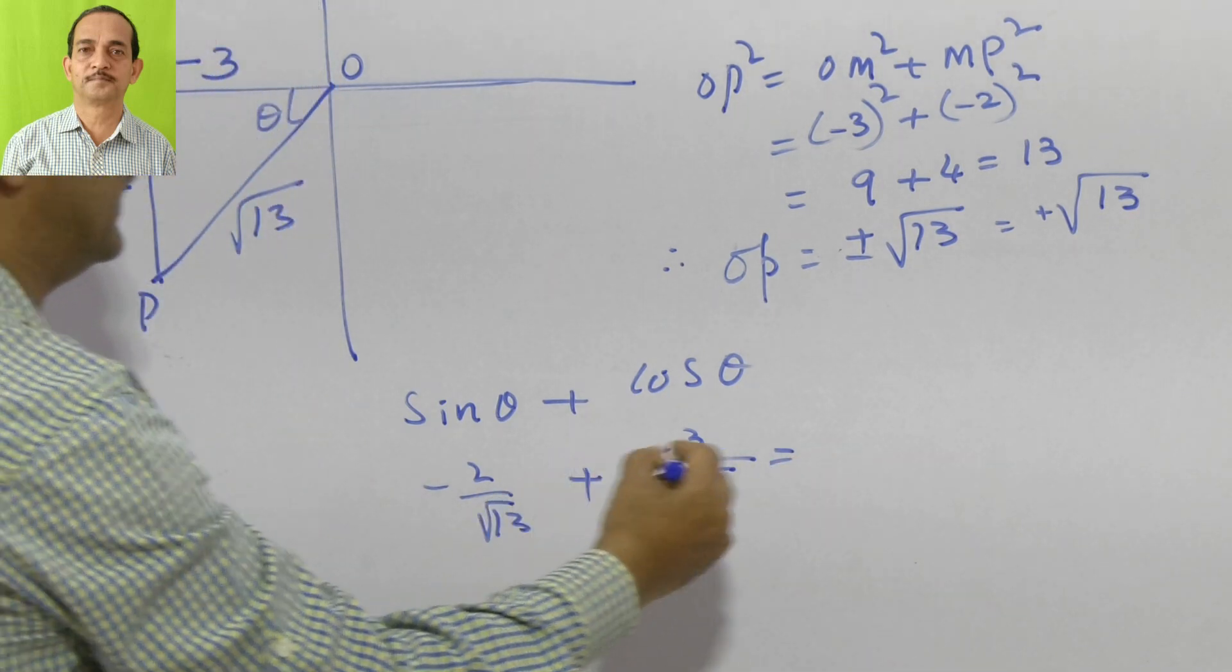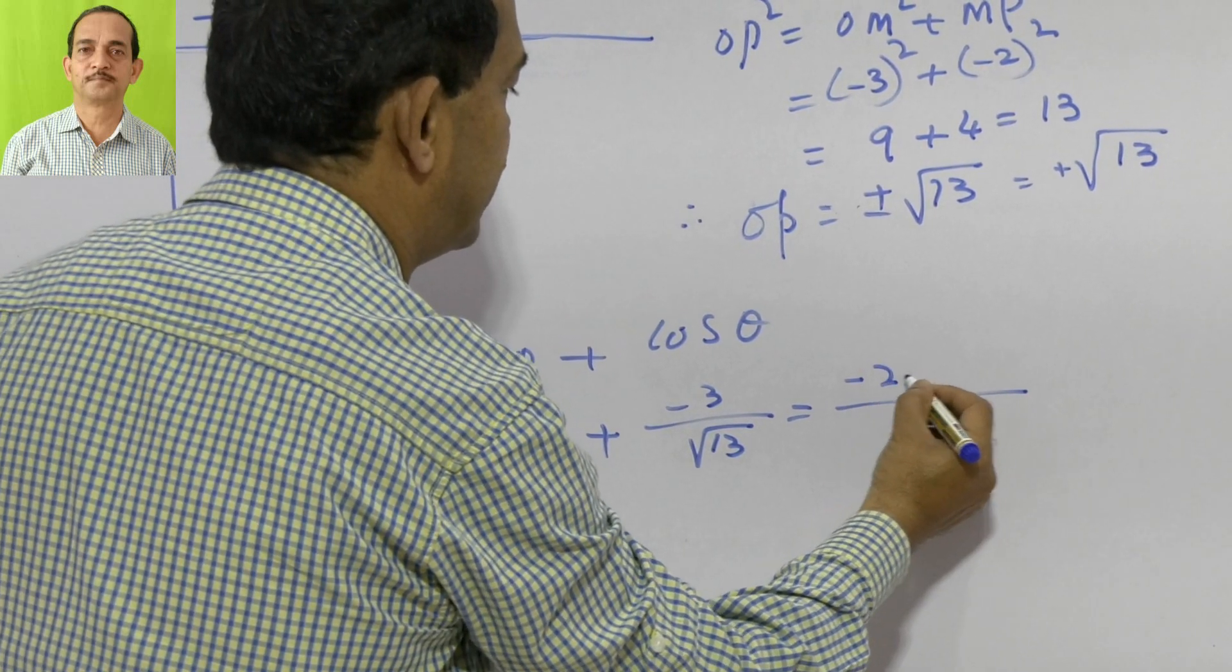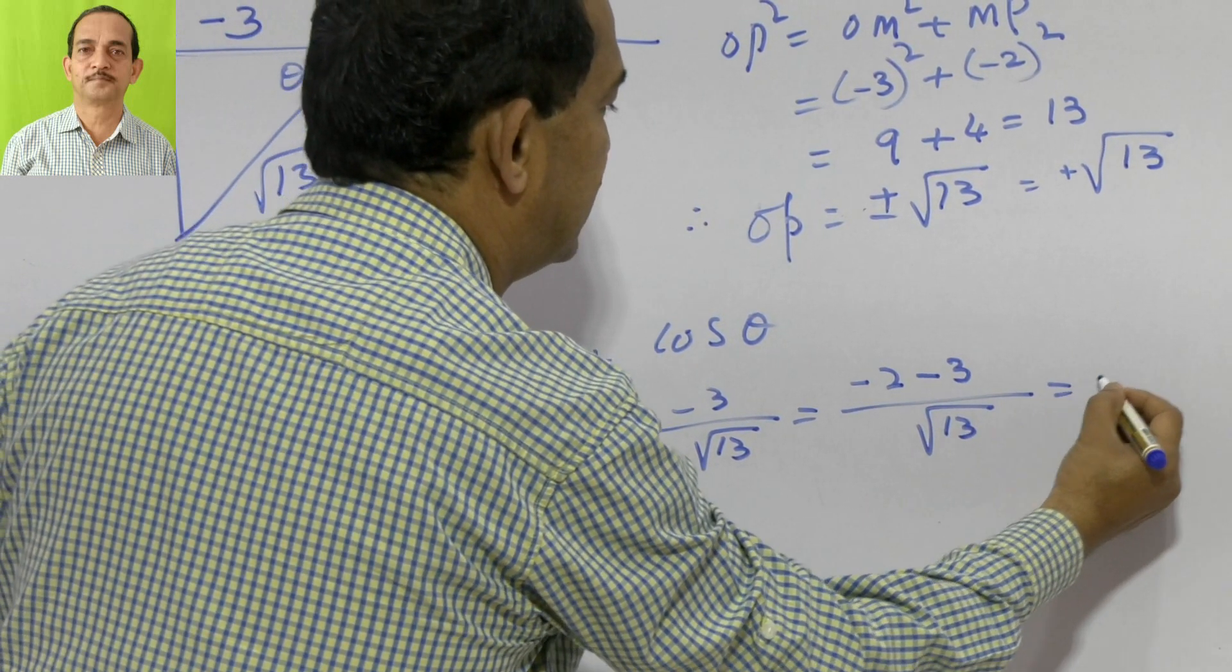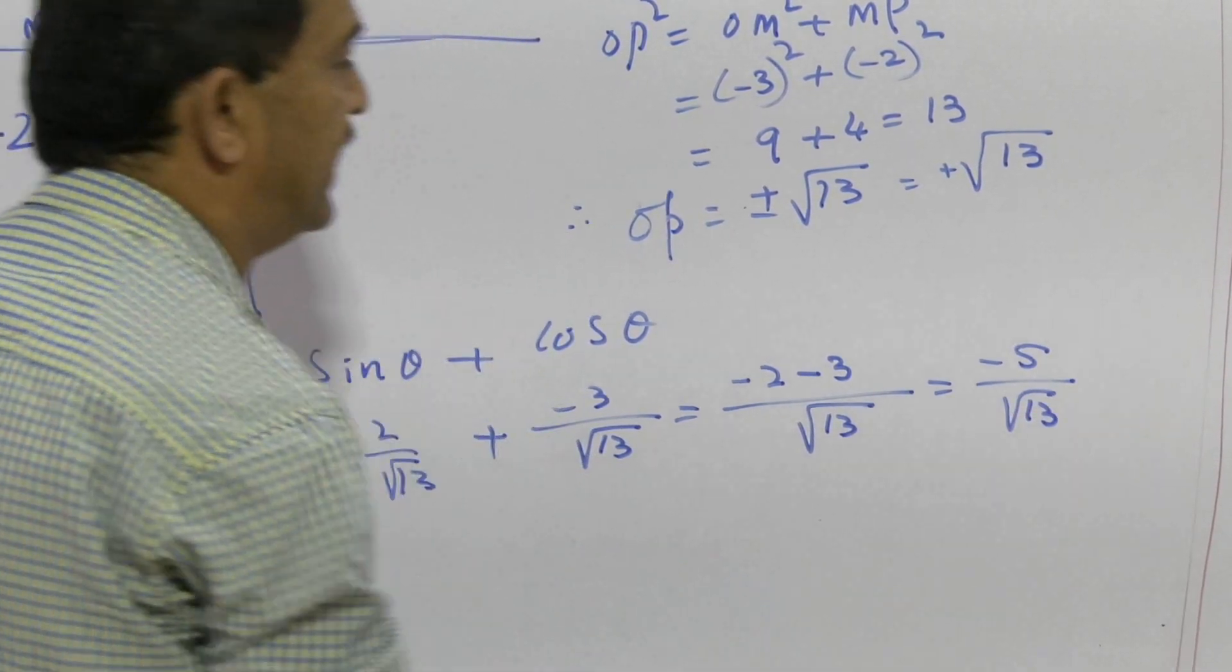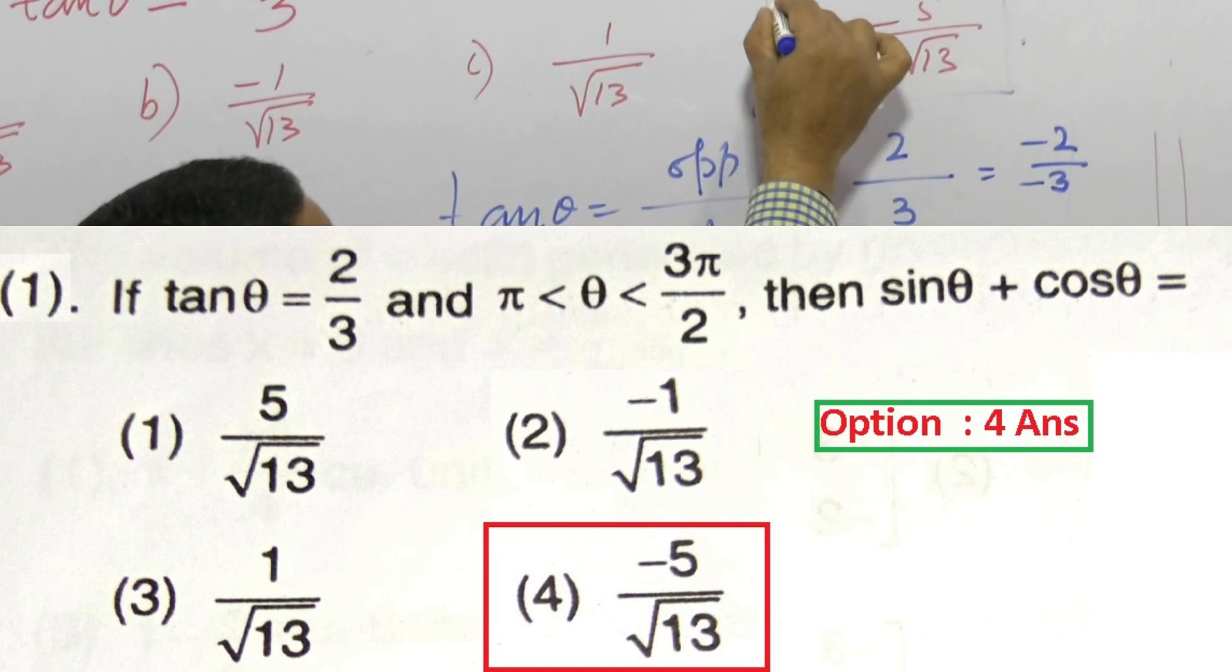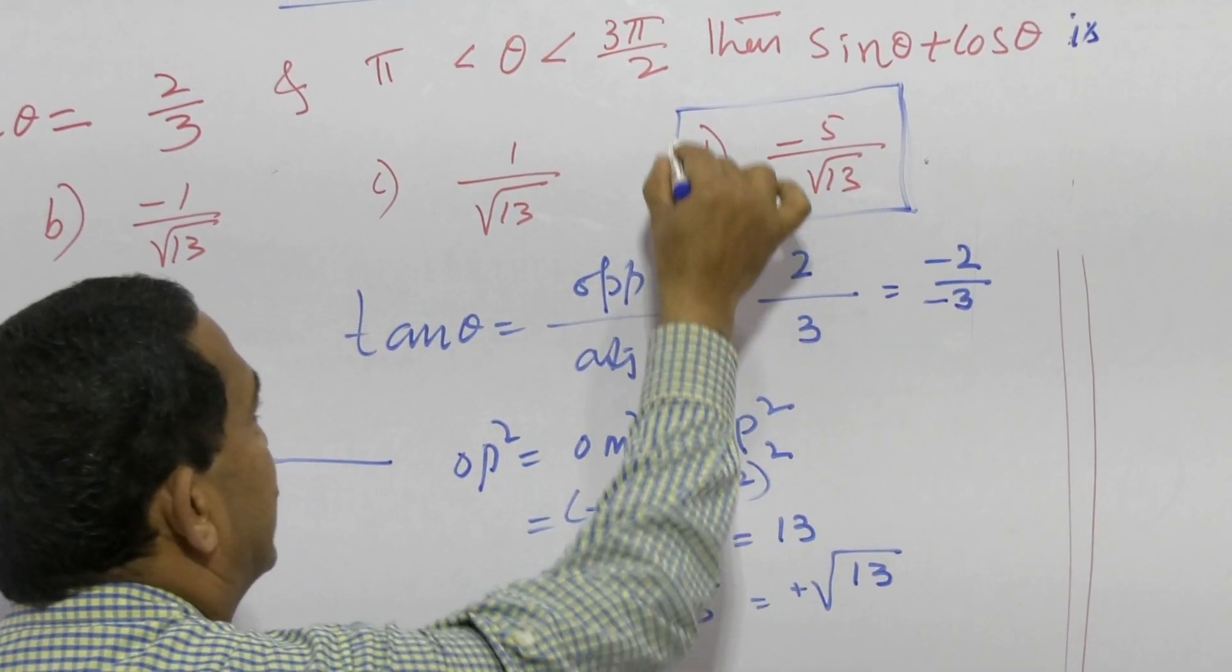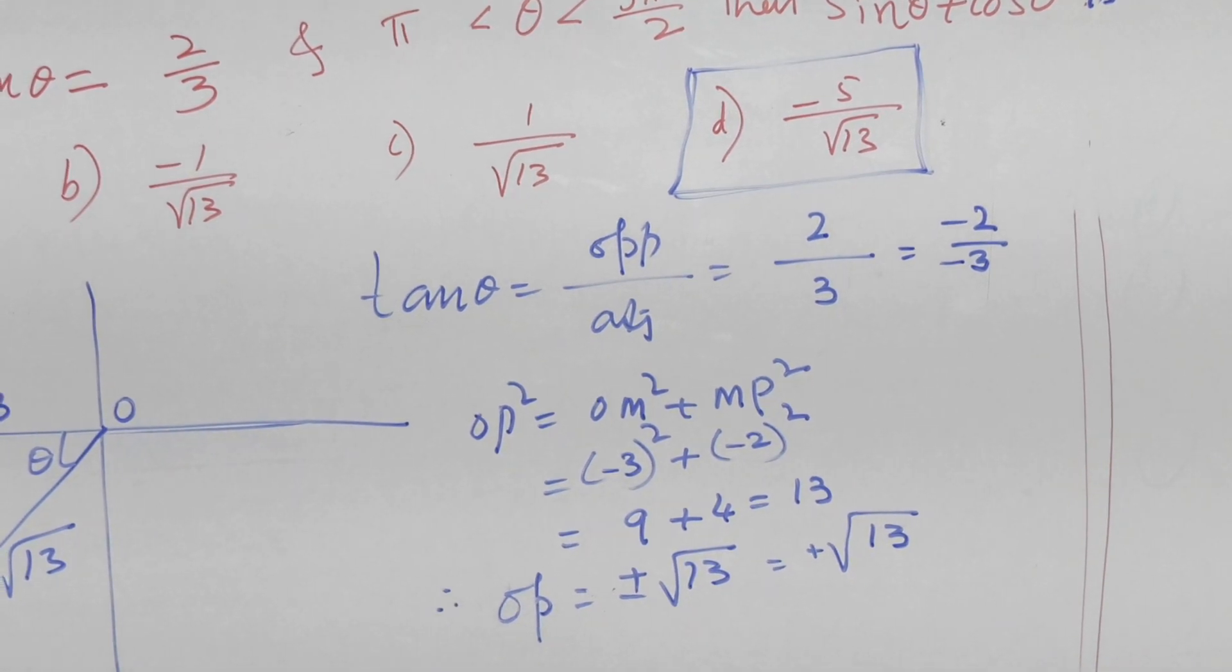So totally while adding this, the LCM is root 13. We are having minus 2 minus 3, that is minus 5 by root 13 is the answer. Therefore, we have to think that out of 4 answers, the one answer is D, that is minus 5 by root 13.